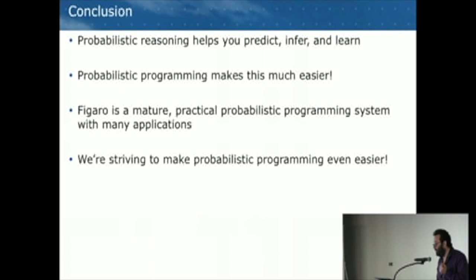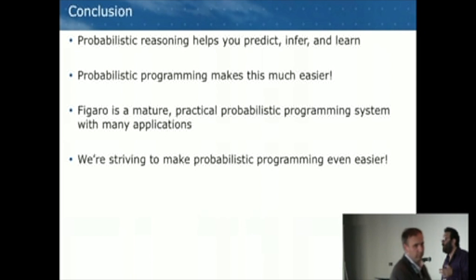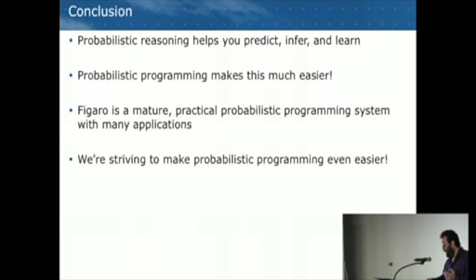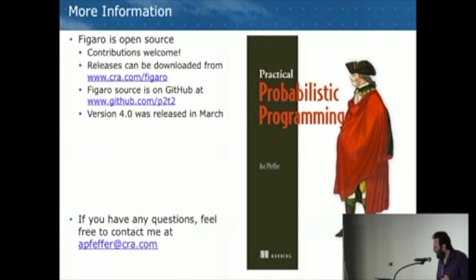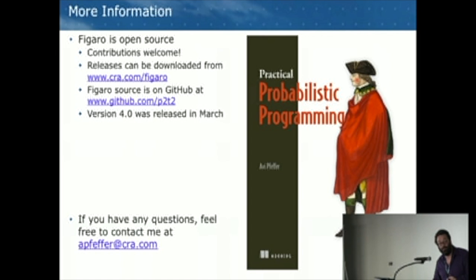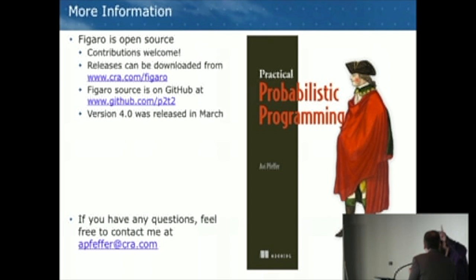To conclude: probabilistic reasoning is a powerful framework for machine learning — it helps you predict the future, infer past causes, and learn from experience. Probabilistic programming makes this much easier. Figaro is a mature and practical probabilistic programming system with many applications, and we're striving to make it even easier. I'd like to acknowledge DARPA and the Air Force as sponsors. Figaro is open source and we welcome contributions. There's also a book available with a 39% discount code at the Manning website.